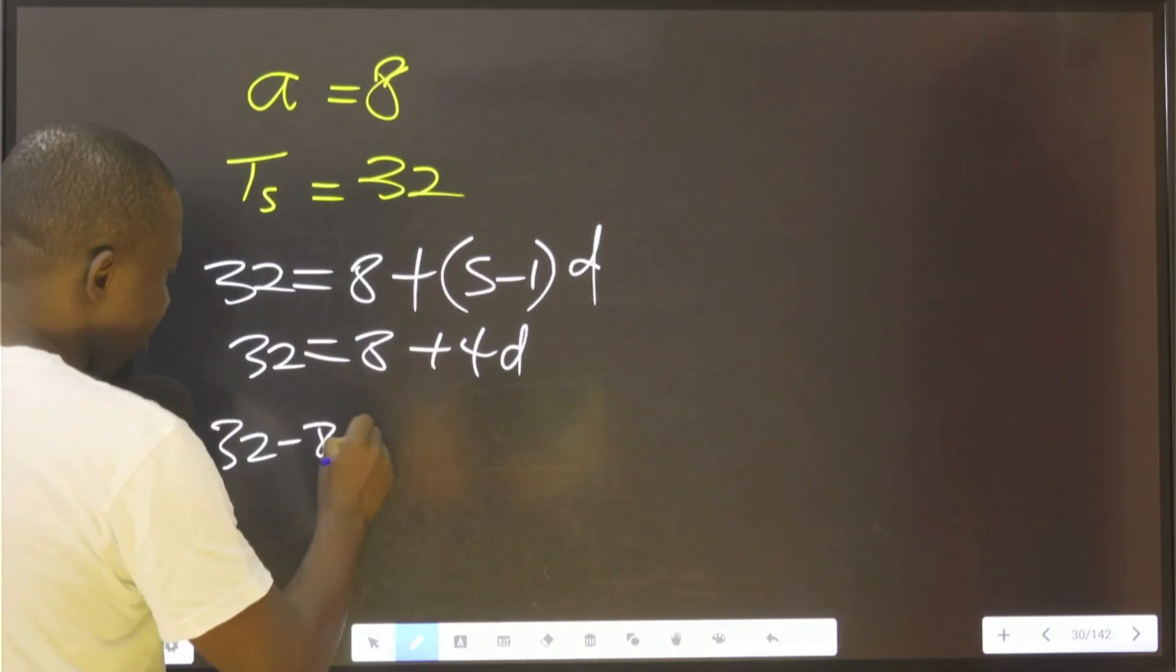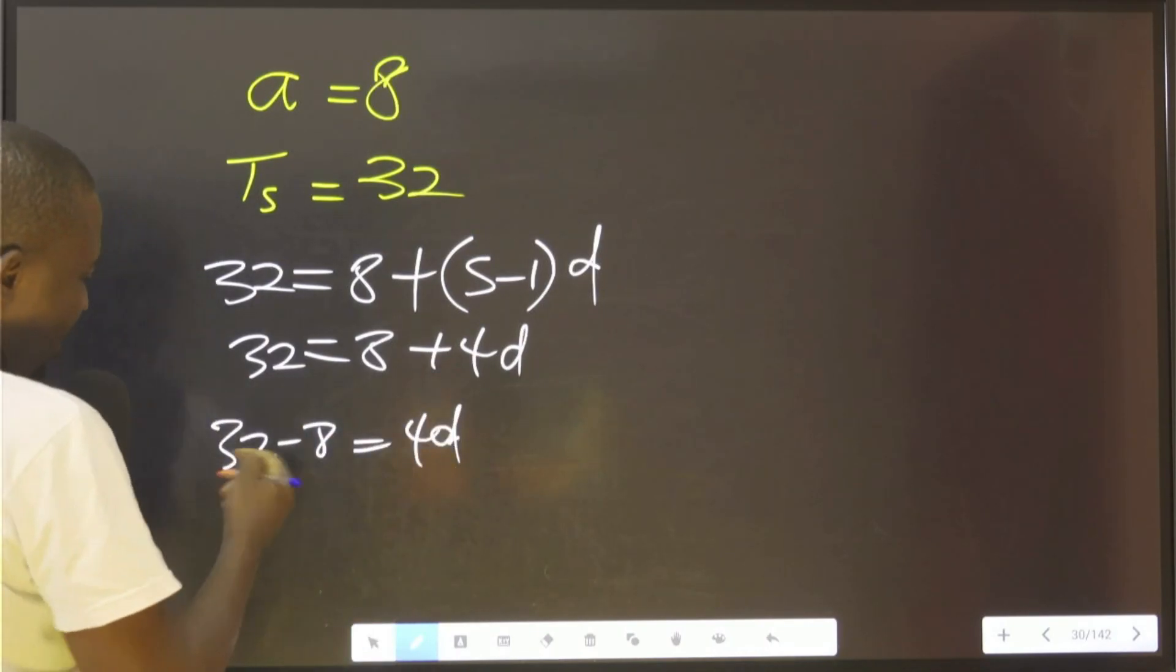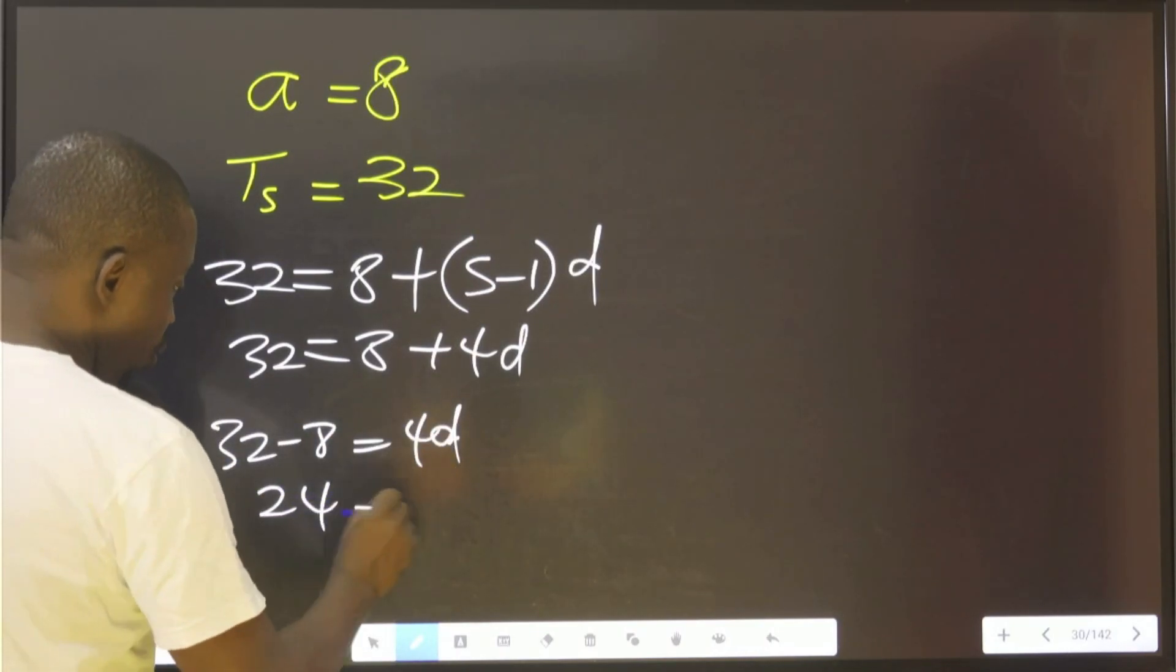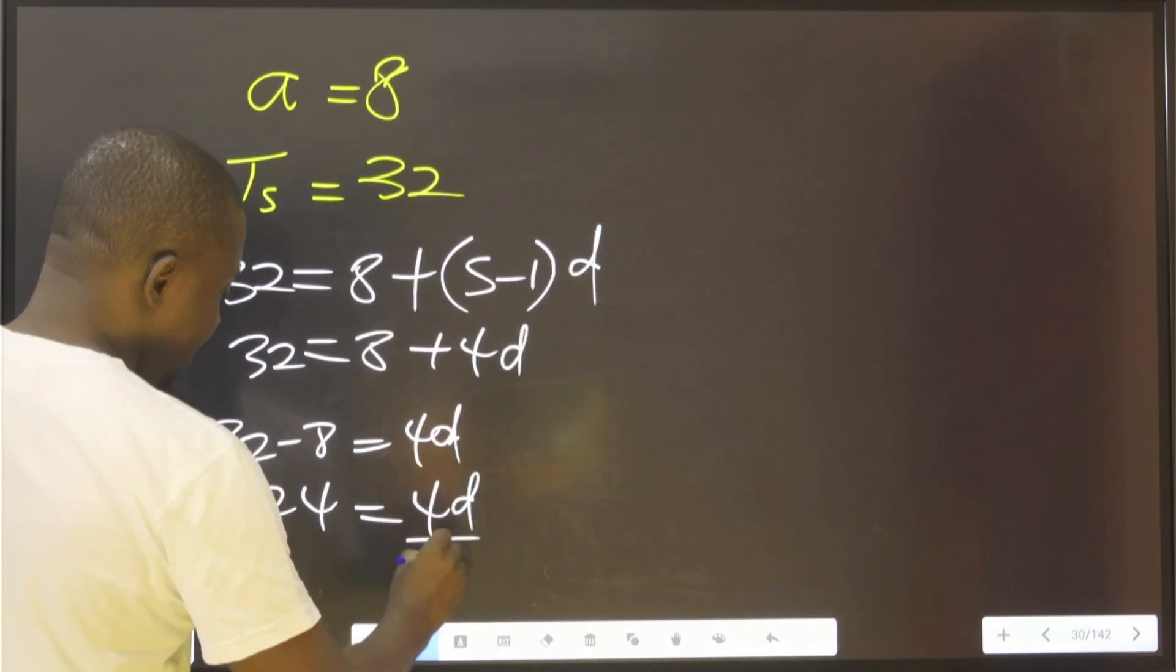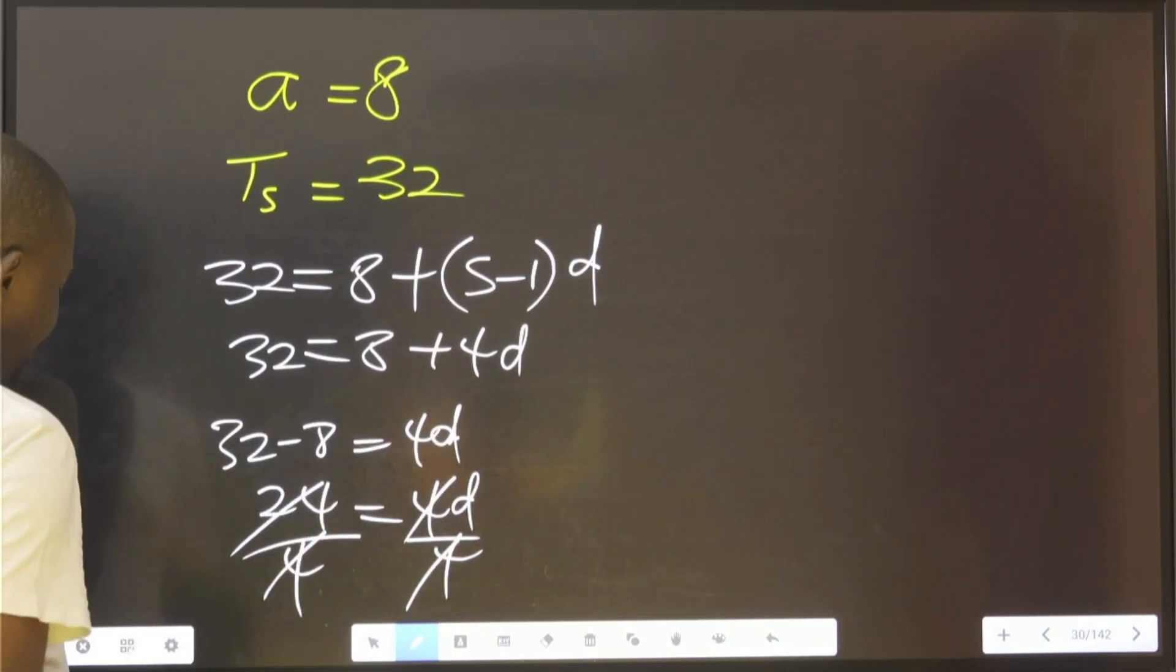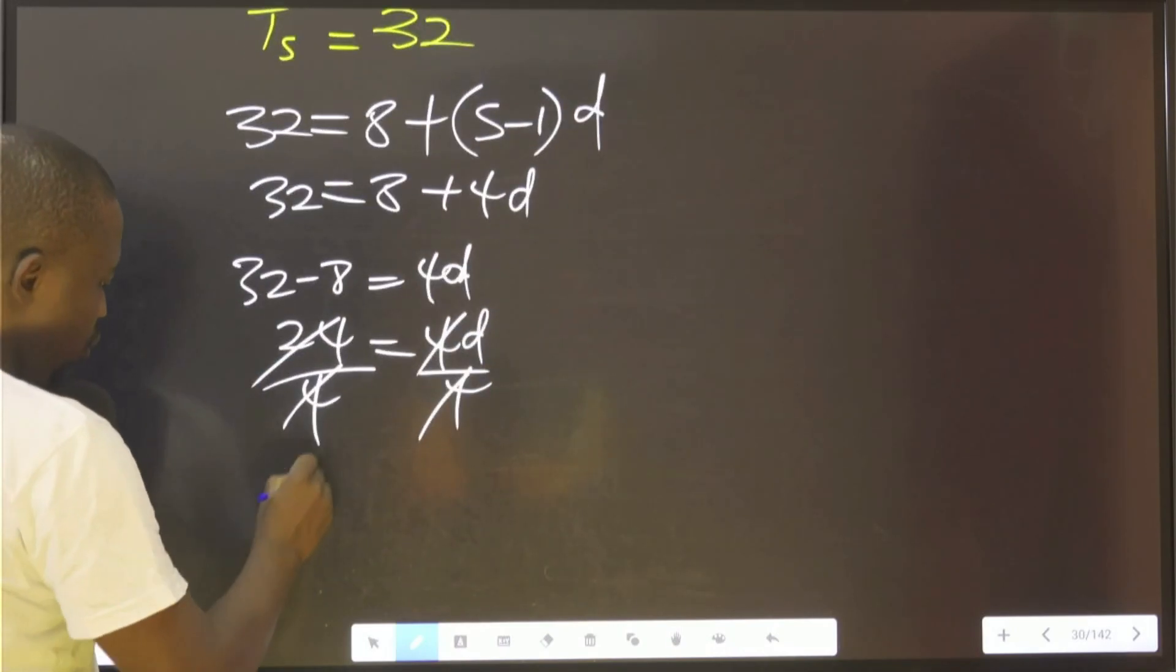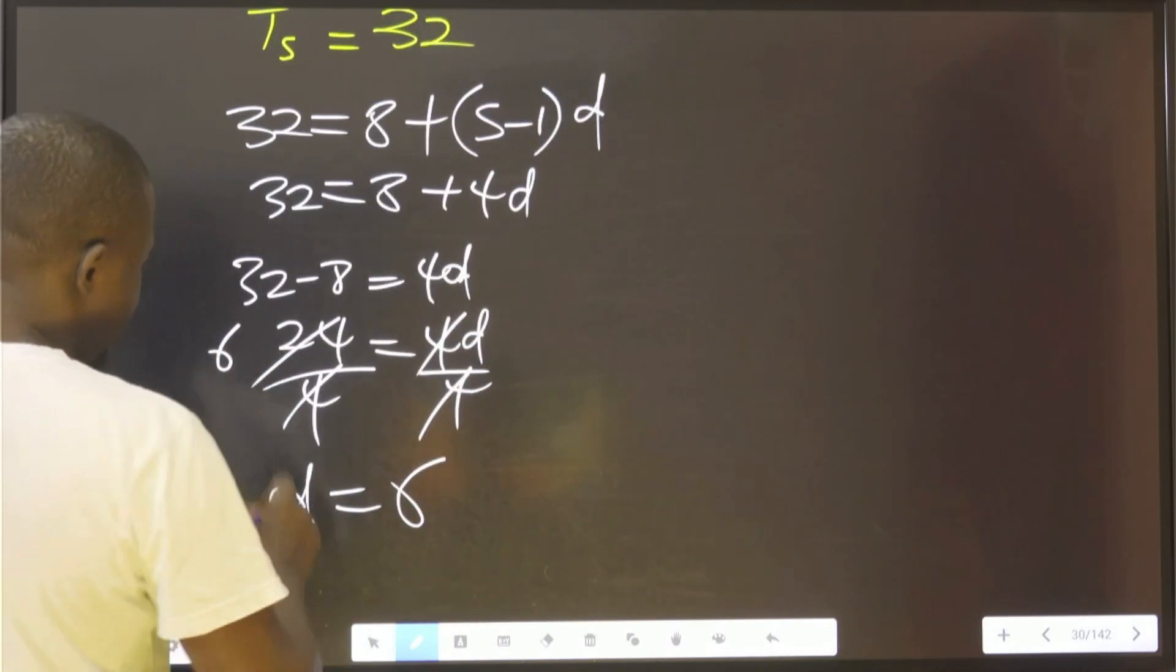With this, now you agree with me, you have 32 minus 8 equals 4d. This will give us 24 equals 4d. Divide both sides by 4, you're going to have 6. So d therefore is equal to 6.